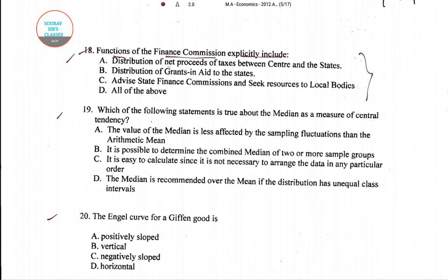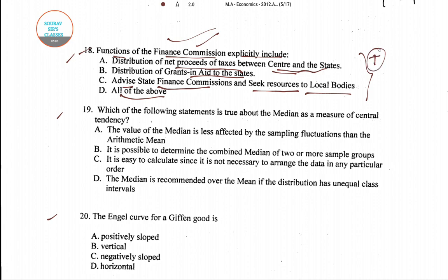Question 18: the functions of the Finance Commission explicitly include — options are: distribution of net proceeds of tax between centre and state, distribution of grants-in-aid to states, advising state finance commissions and seeking resources to local bodies, and all of the above. The Finance Commission explicitly focuses on the distribution of net proceeds of tax between centre and state. So option A is the right answer.